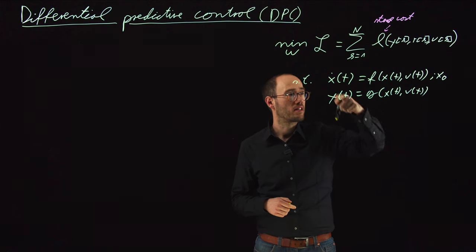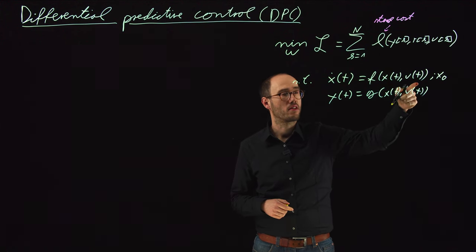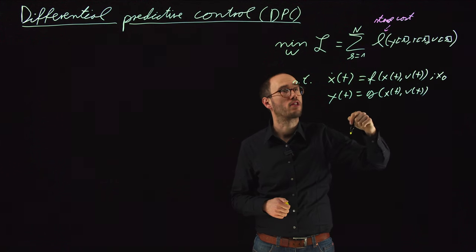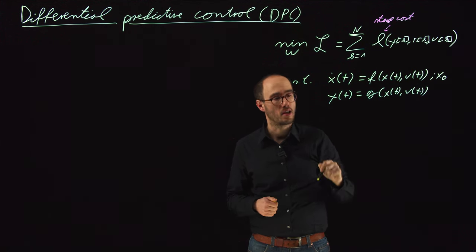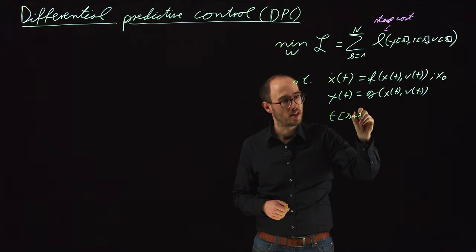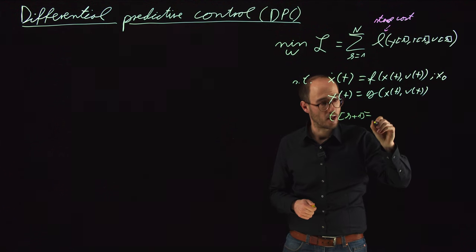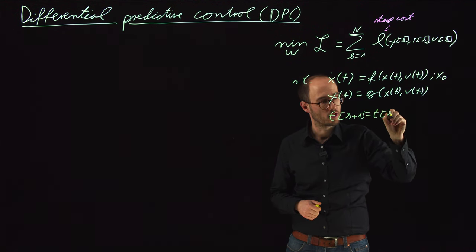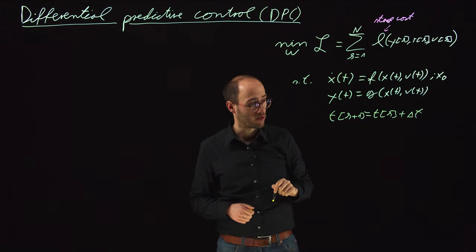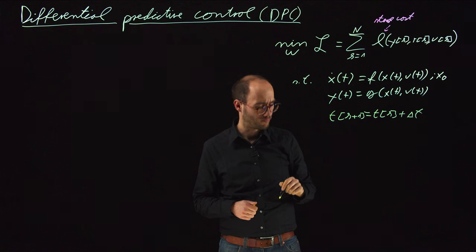This is a continuous-time representation — an ODE representation — and since we perform stage cost evaluation on a discrete time grid, we also need to account for time steps t_{k+1} on a discrete grid with t_k plus delta t, where delta t is our constant step size.